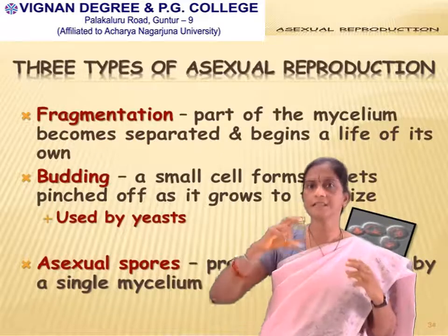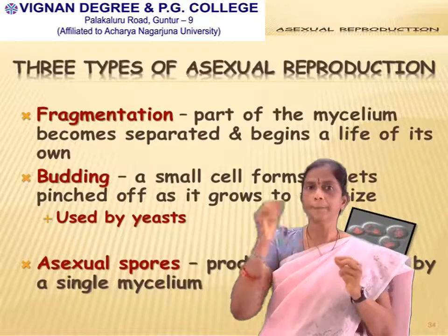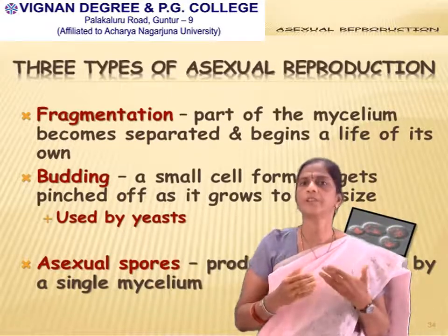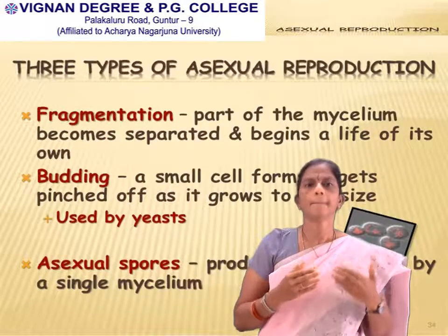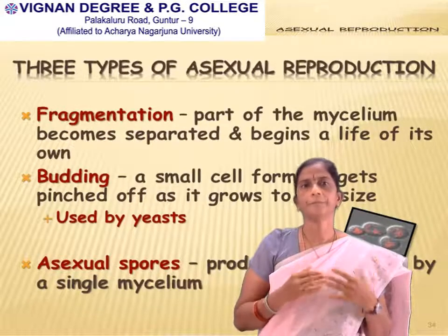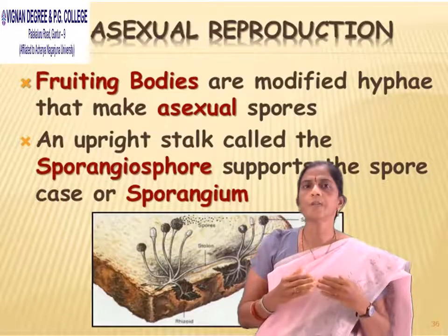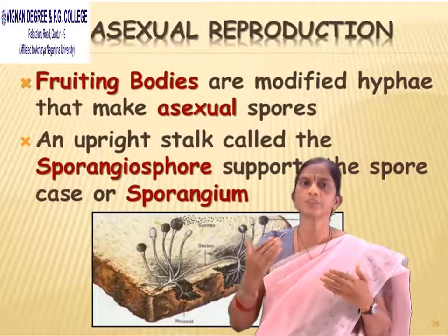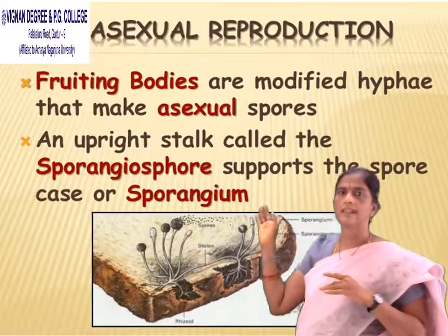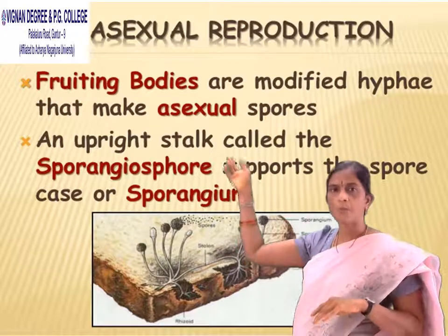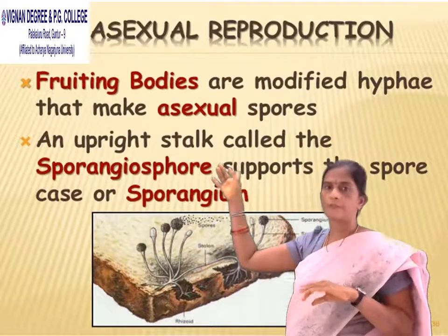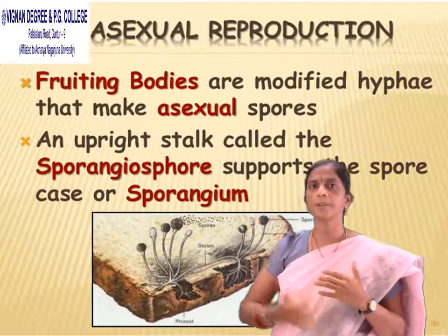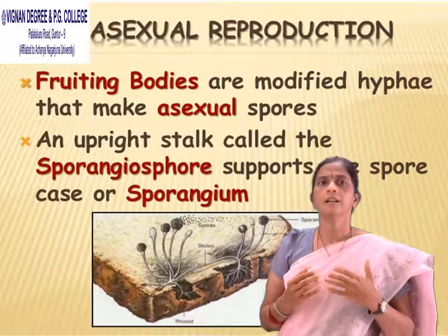In budding, a small cell forms and gets pinched off, then grows into full size. Asexual reproduction can also be done by spores from a single mycelium. Fruiting bodies are modified hyphae that make asexual spores. An upright stalk called a sporangiophore supports the spores, from which the spores emerge.